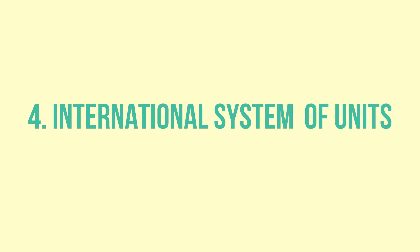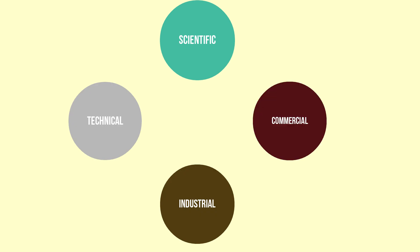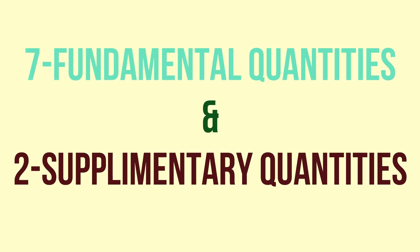The problem with using different systems is that it is difficult to communicate with people from different places around the world. This brings us to the final part of the video — the SI system. In 1971, CGPM held its meeting and decided this system of units, which are now used for scientific, technical, industrial, and commercial work. The main advantage of SI units is that they use the decimal system, making conversions simple and convenient. The SI system gives us seven fundamental quantities along with two supplementary quantities.